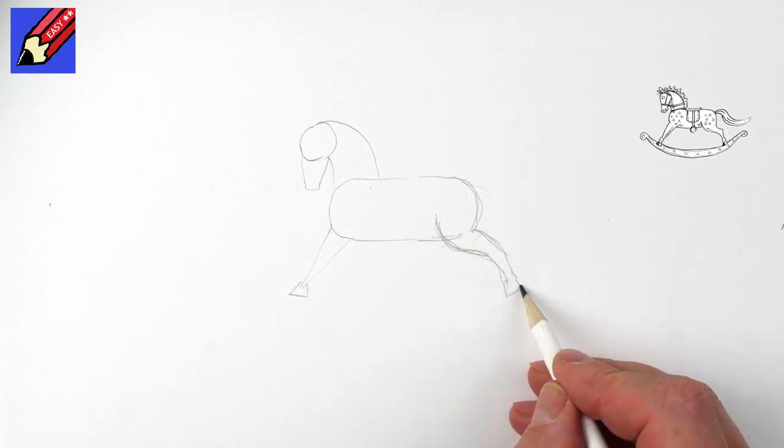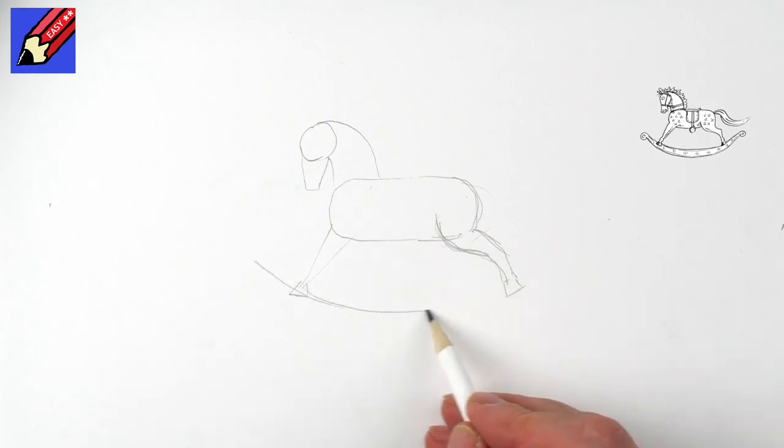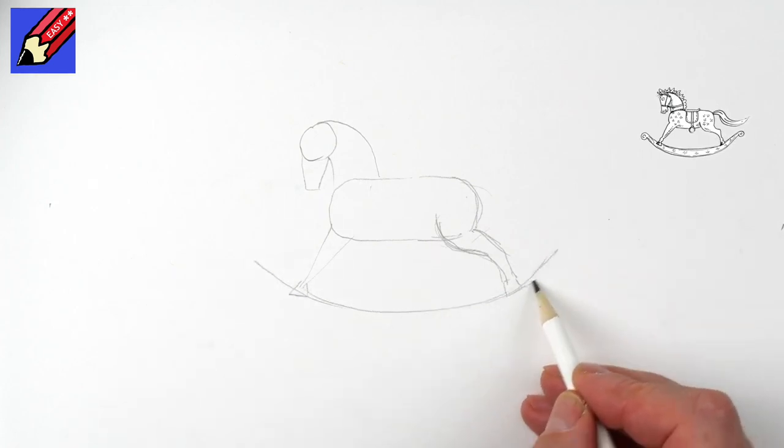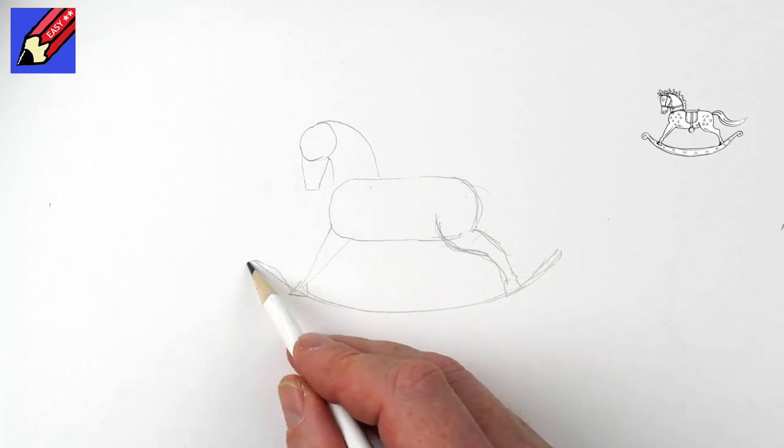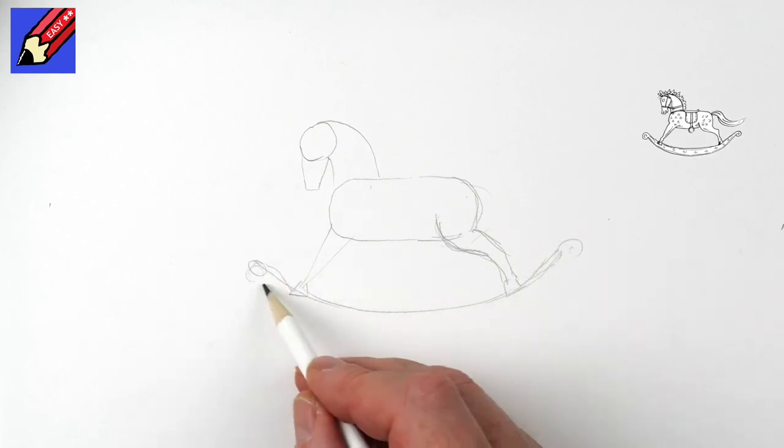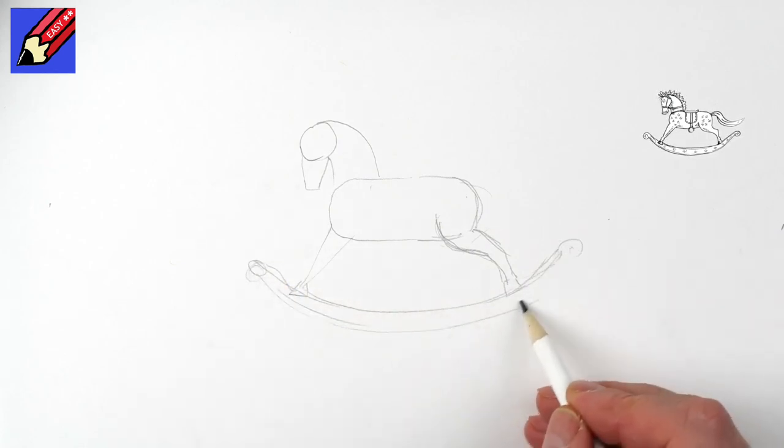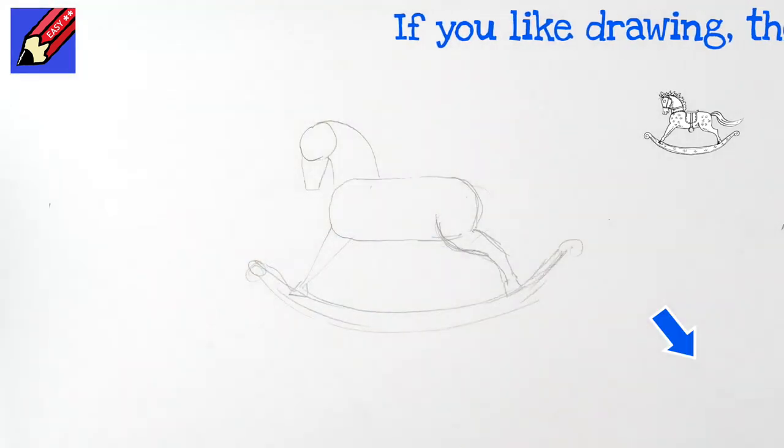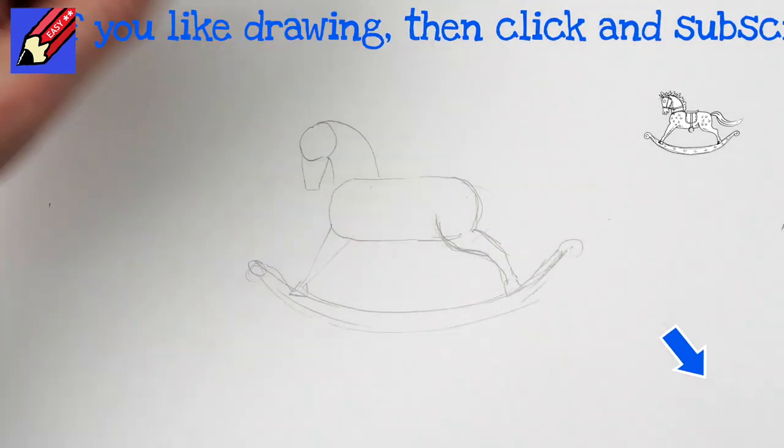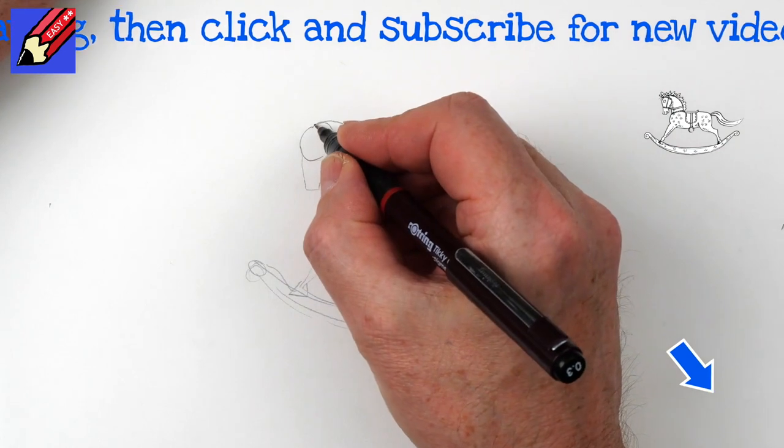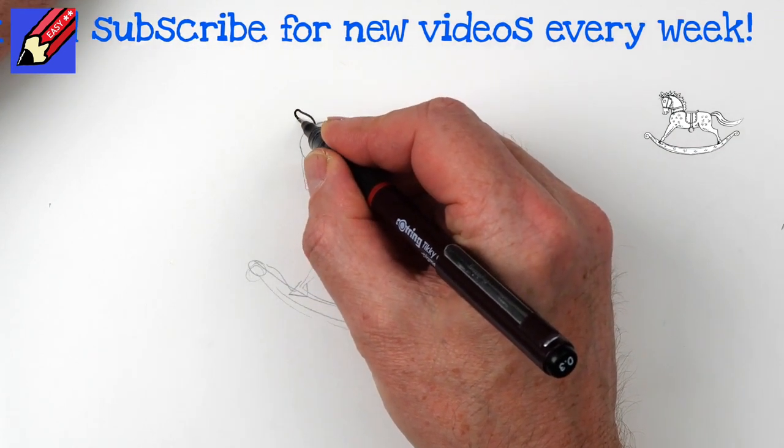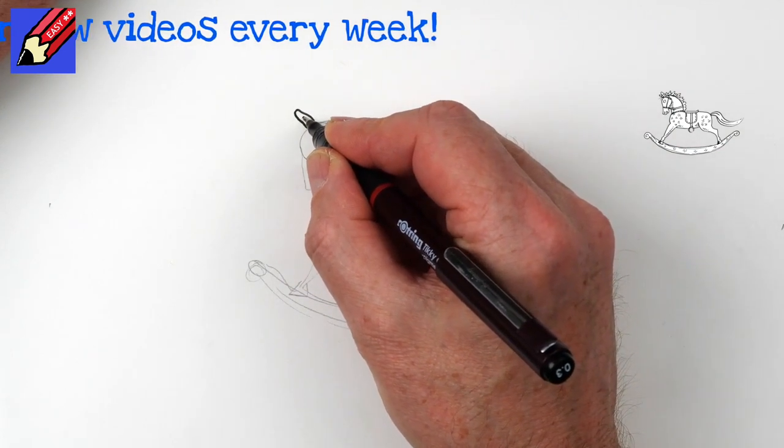And we're going to want the hooves at the bottom, and we're going to want a curve for the actual rocking part, which is going to be something like that. Now, while I get my pen, make sure you subscribe to Draw Stuff Real Easy. Keep coming back for lots more drawing videos every week.